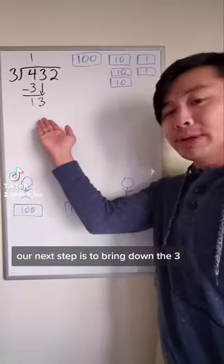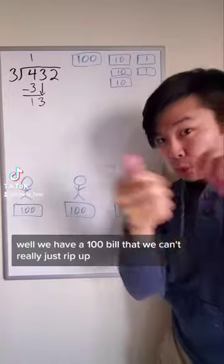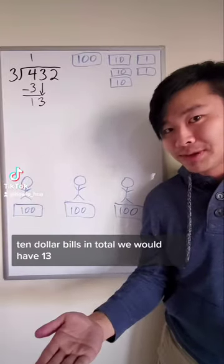Our next step is to bring down the three, but what does this mean? Well, we have a one hundred dollar bill that we can't really just rip up, but we can exchange it for ten ten dollar bills.